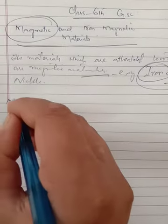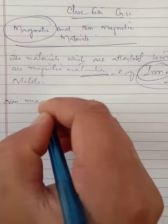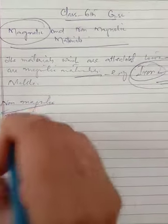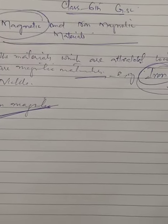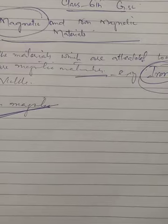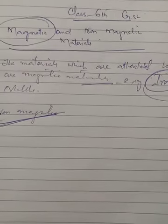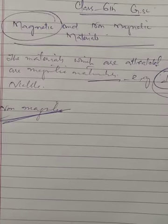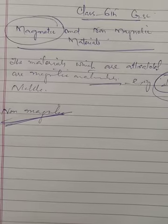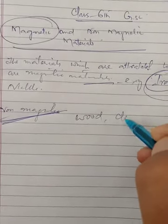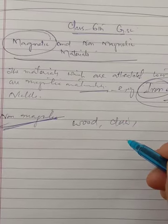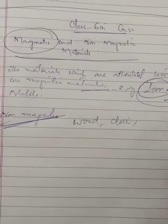Non-magnetic materials are those which are not attracted towards a magnet. For example, wood, cloth, or glass.